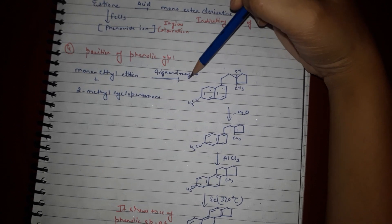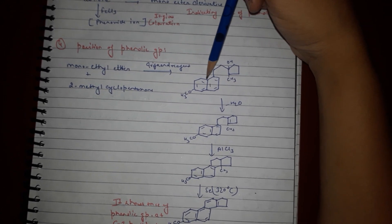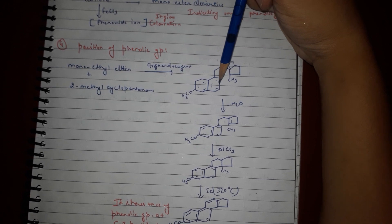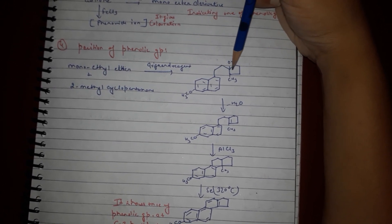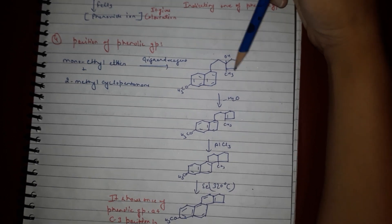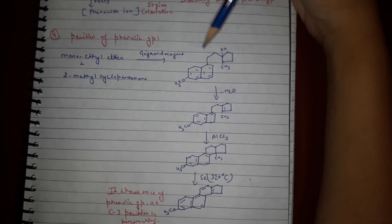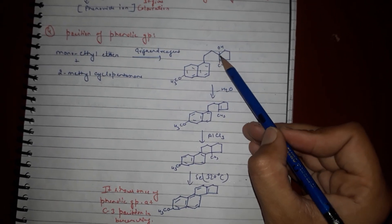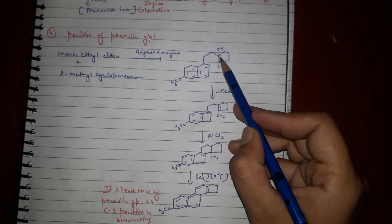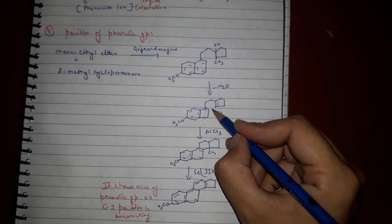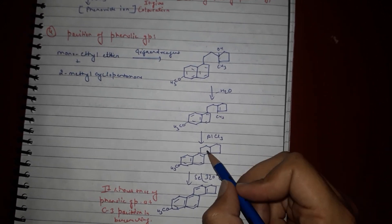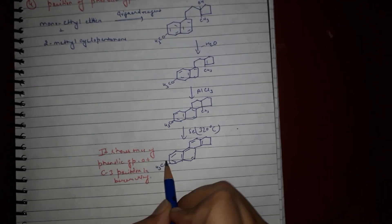Position of phenolic group: monomethyl ether plus dimethyl cyclopentyl Grignard reagent gives two six-member rings and side chain and pentane ring. On dehydrogenation there is bond formation, and on treatment with CCl3 and selenium it gives chrysene.